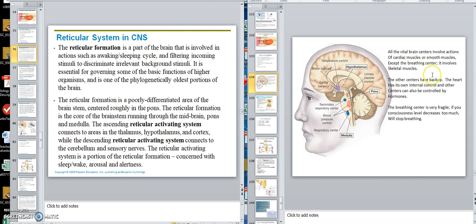The other systems have backup. The heart has its own internal control. Remember, it had auto-rhythmicity. You could take it out of the chest, put it in a solution, and it keeps beating. And other centers also can be controlled. For example, we had the cardiac center and the vasomotor center. But the vasomotor center, remember, hormones could dilate and constrict blood vessels. The breathing center is very fragile. If your consciousness level decreases too much, you will stop breathing.